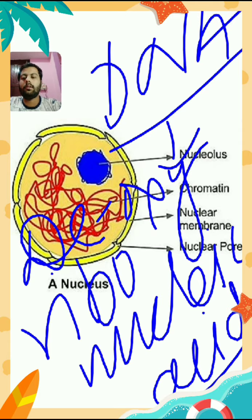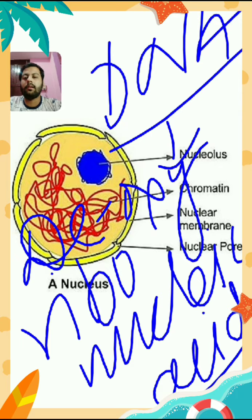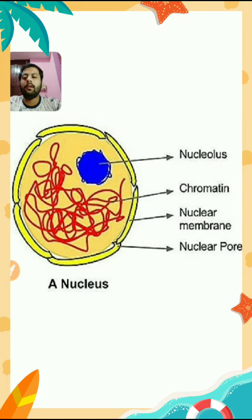The full form of DNA is deoxyribonucleic acid. Character is transmitted from one generation to the next generation. There are lots of characters, and for each particular character, a particular gene is responsible for its transmission.